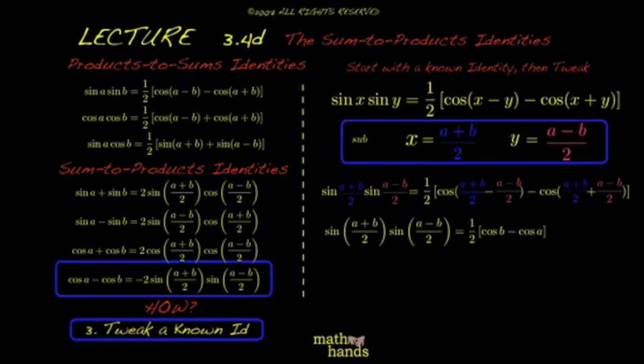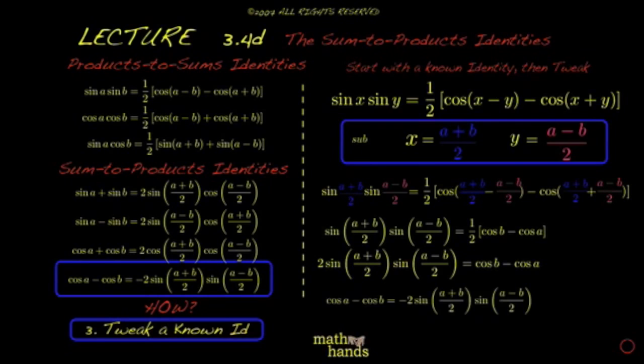It looks like this, which already looks very much like the identity we want to prove. Multiply both sides by 2, and the signs are switched. Yes, you see the sign on the identity says cosine a minus cosine b, and ours is backwards.